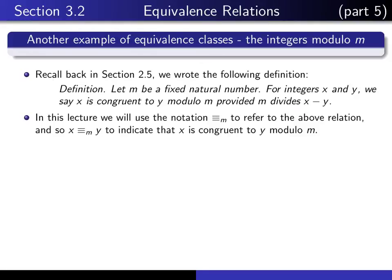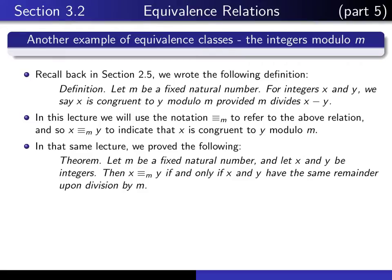In this lecture we're going to use this notation to refer to the name of the above relation, meaning that x is congruent to y modulo m. We proved the following interesting theorem: if m is a fixed natural number and x and y are any two integers, then x is congruent to y modulo m if and only if x and y have the same remainder upon division by m.